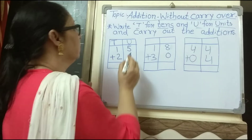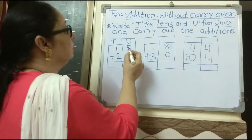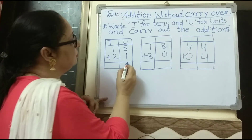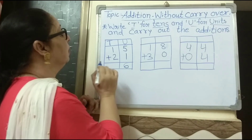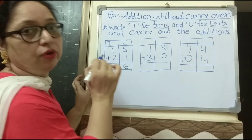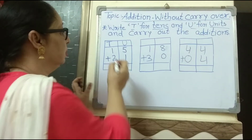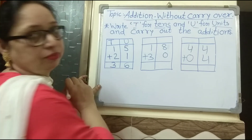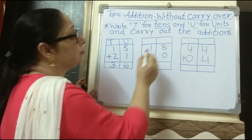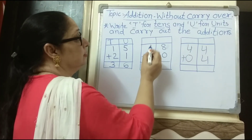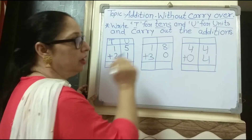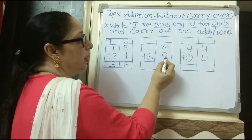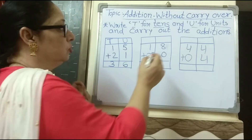Now we start. Five plus one equals six. Next: one plus two equals three.